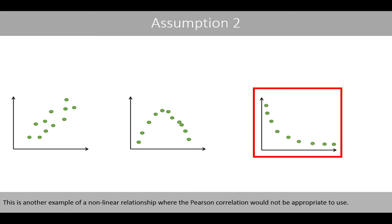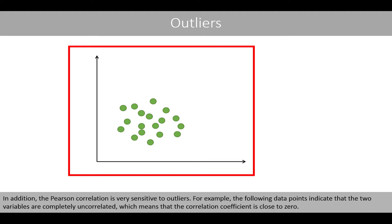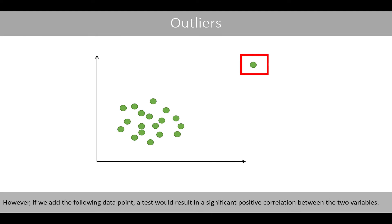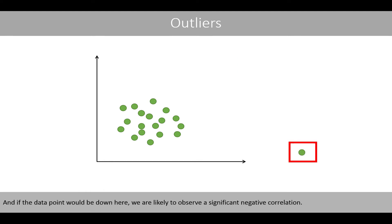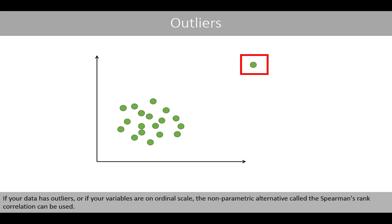Another example of a nonlinear relationship would also make the Pearson correlation inappropriate. An additional assumption is that both variables are on a continuous scale and follow a normal distribution. Furthermore, the Pearson correlation is very sensitive to outliers. For example, if a set of data points indicates the two variables are completely uncorrelated with a correlation coefficient close to 0, adding a single outlier data point could result in a significant positive or negative correlation — which feels strange because a single data point would completely determine our conclusion. If your data has outliers or your variables are on an ordinal scale, the nonparametric alternative called Spearman's Ranked Correlation can be used.